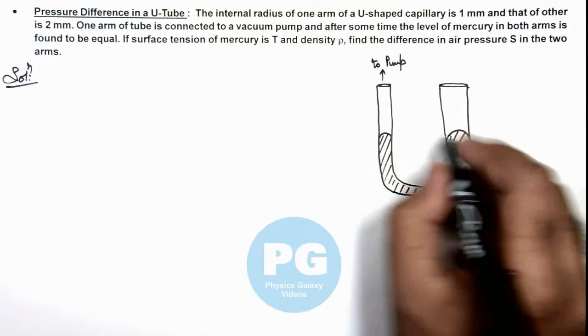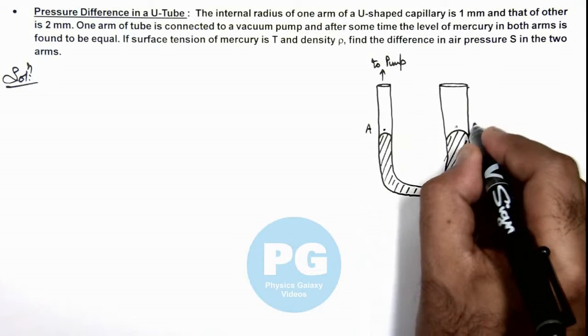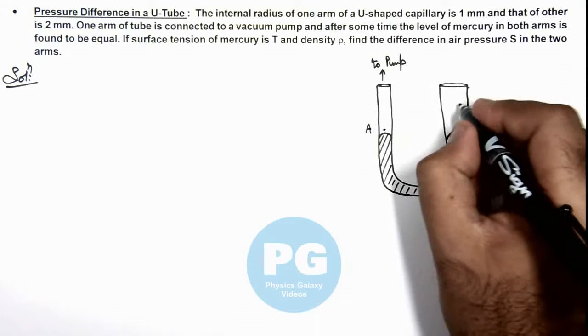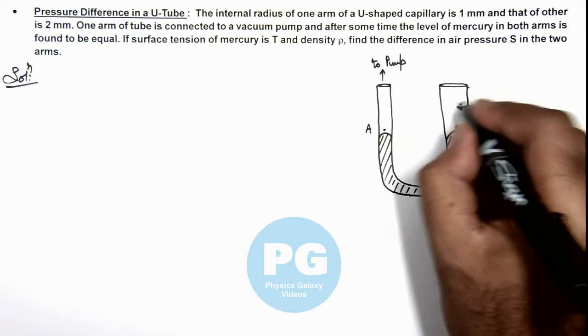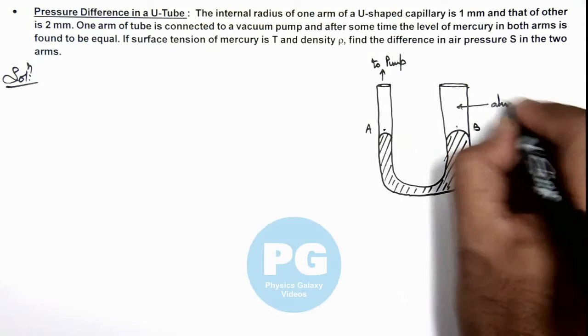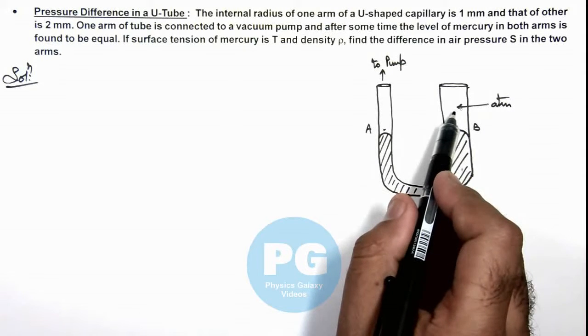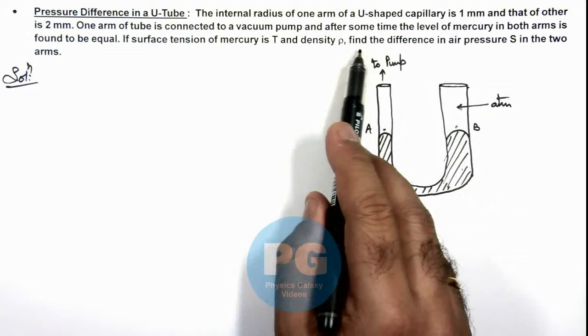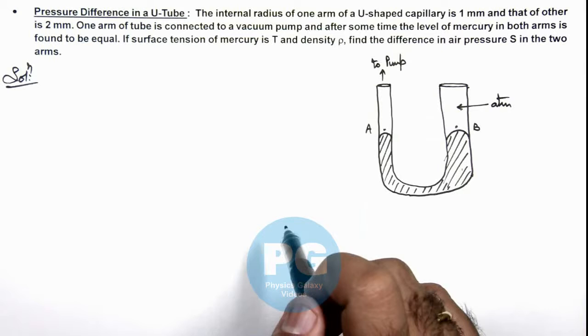So in this situation, if this point is taken as A and this point is taken as B, we can see on the other side where cross-section area is large, there will be atmosphere. And we are required to find this atmospheric pressure only, because we are asked to calculate the difference in air pressure in the two arms.